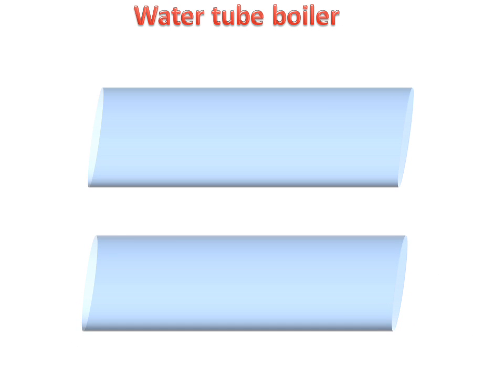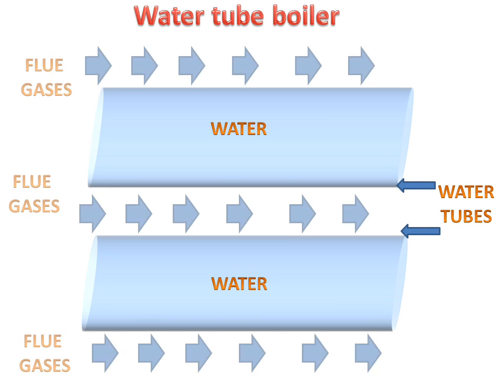If we talk about water tube boiler, water tubes are outside the boiler shell and flue gases are surrounding these water tubes. Flue gases will flow surrounding the water tubes and the water will be inside these tubes.